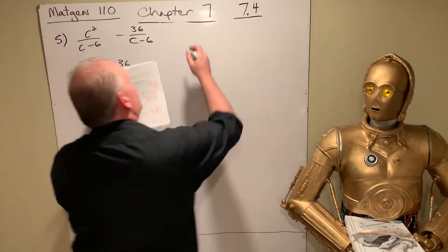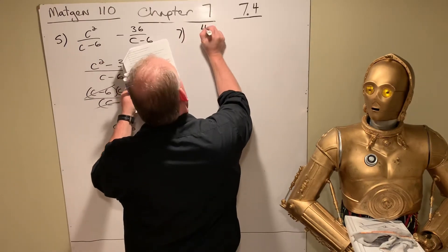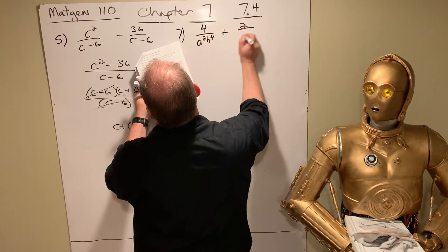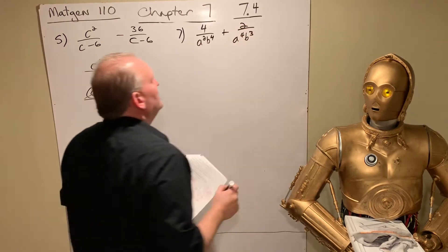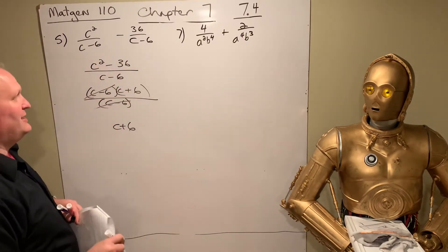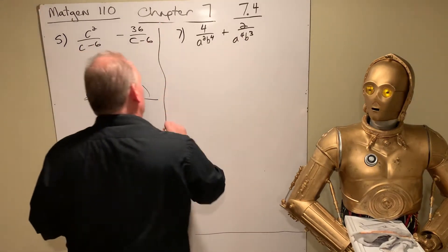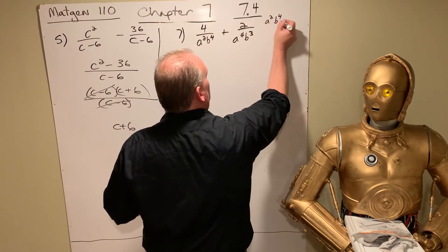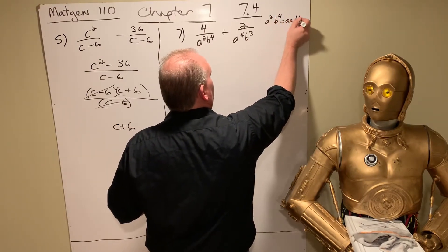Let's look at number 7. So unlike this one, those are not common denominators. So we have to do a little work on this one. Let's break down A squared B4 into A, A, B, B, B, B.